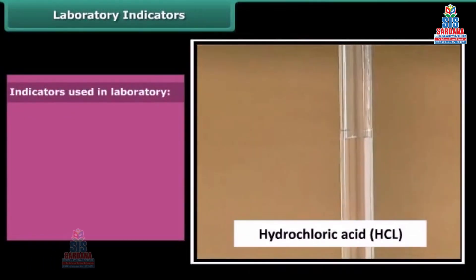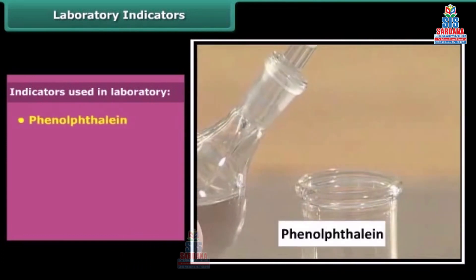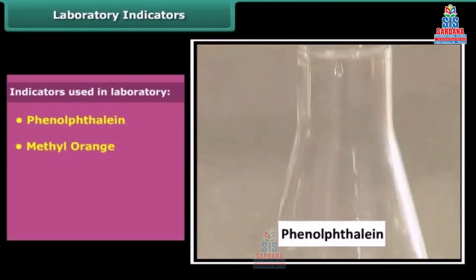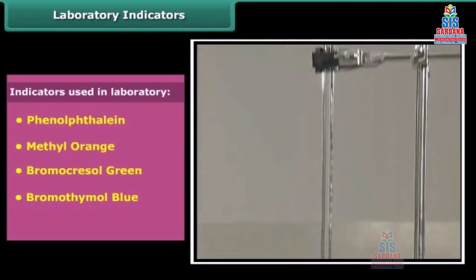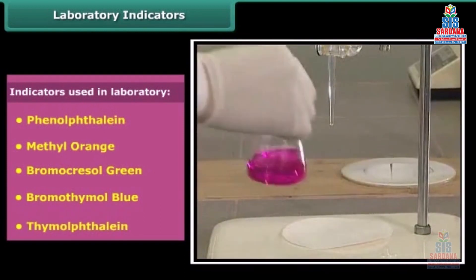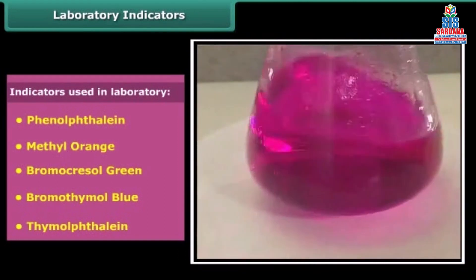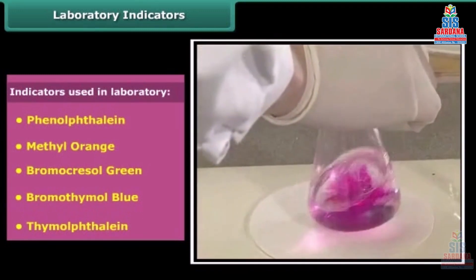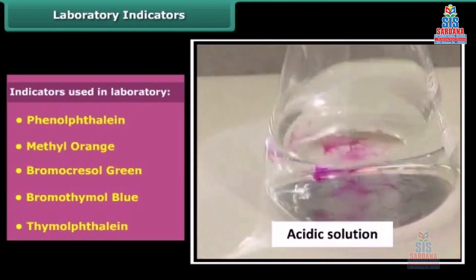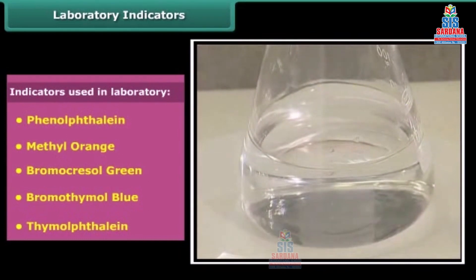In a simple experiment, take some hydrochloric acid in a beaker and add some phenolphthalein to it. Now add sodium hydroxide dropwise with continuous stirring. After some time, a pink color slowly appears in the solution, becoming brighter as more sodium hydroxide is added. On adding a drop of hydrochloric acid, the solution becomes colorless again. So phenolphthalein appears pink in an alkaline solution, colorless in an acidic solution, and colorless in a neutral medium.